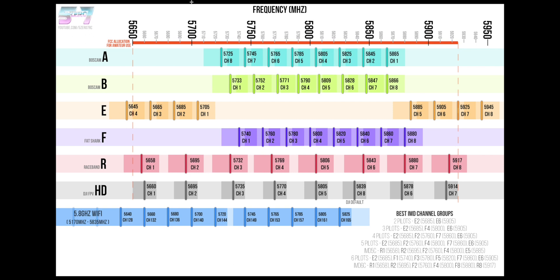Recently when I got the digital DJI FPV HD system, I thought I should add their channels to this chart to make it more complete. I posted it on Reddit and there were some great comments and suggestions. Joshua Bardwell chimed in saying I should add the 5.8 gigahertz Wi-Fi channels so we can see where those are and try to avoid those as well. So I decided to start all over, scrap propwash.com's graphic, and rebuild my own using theirs as sort of a template.